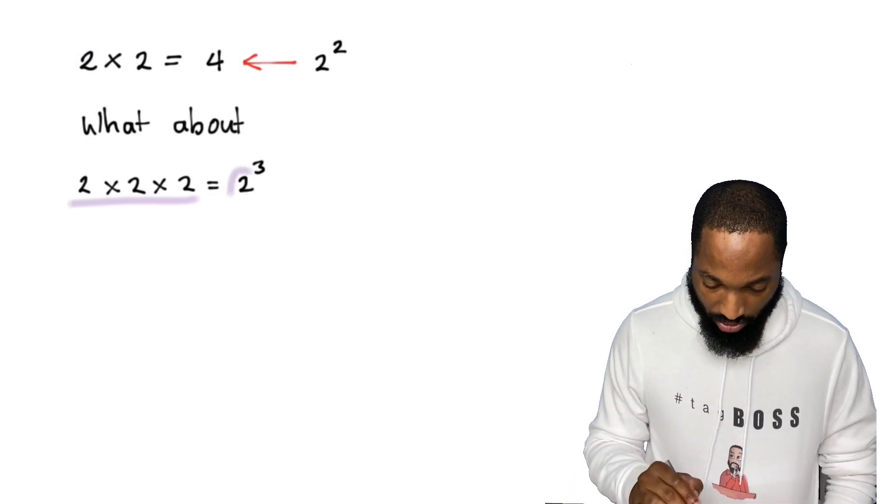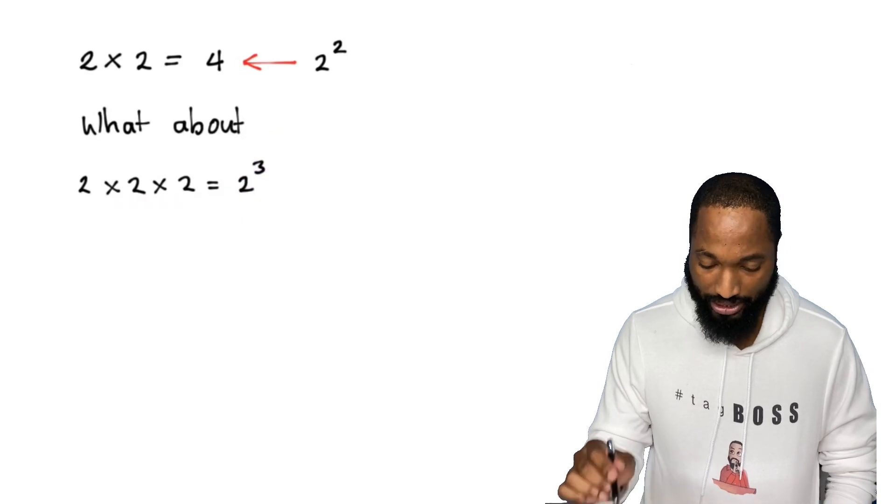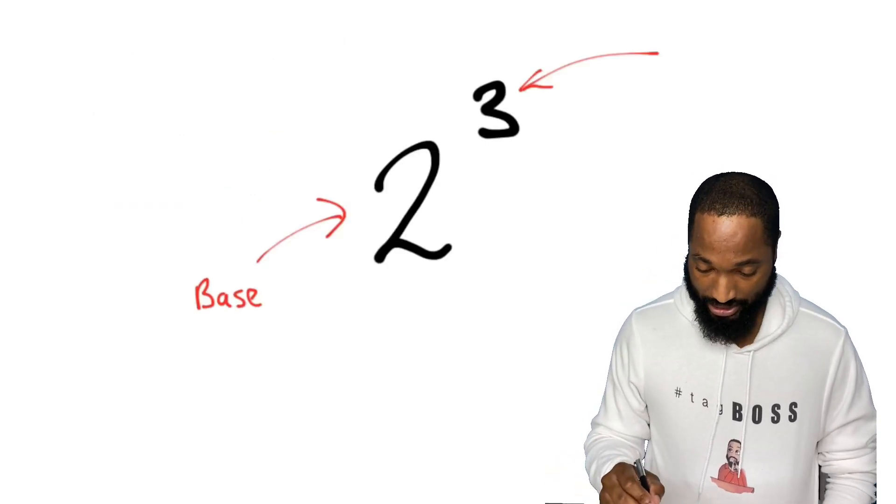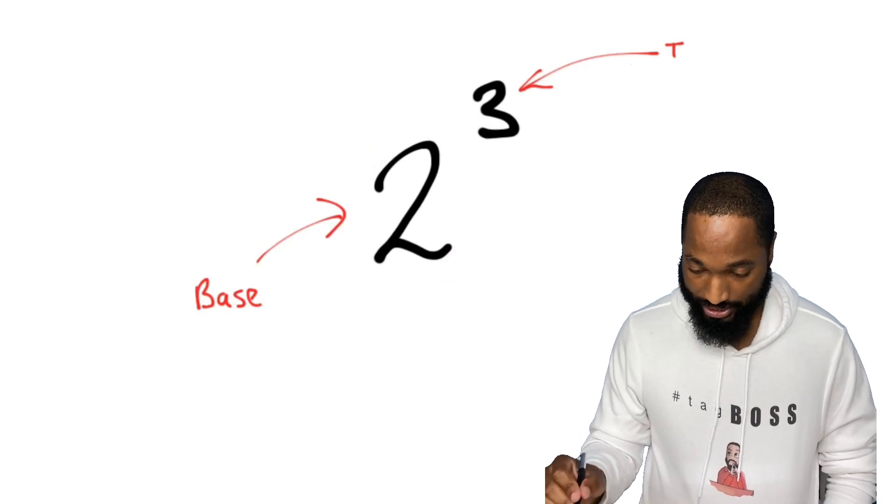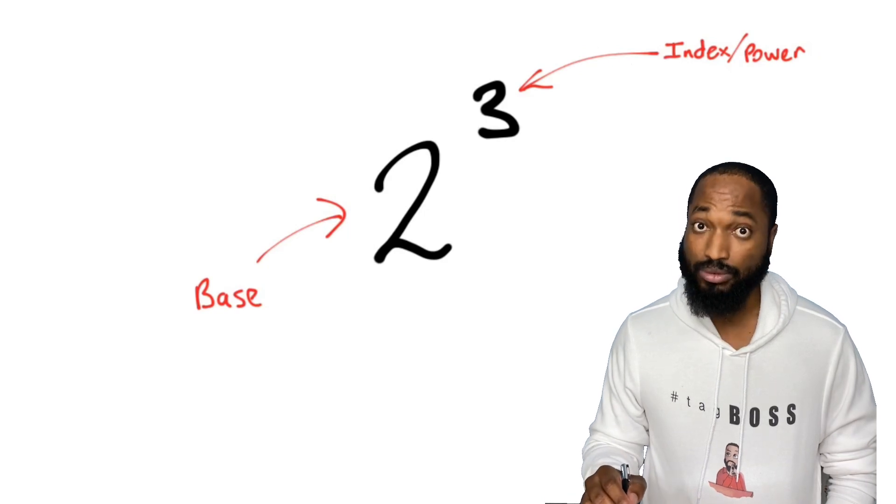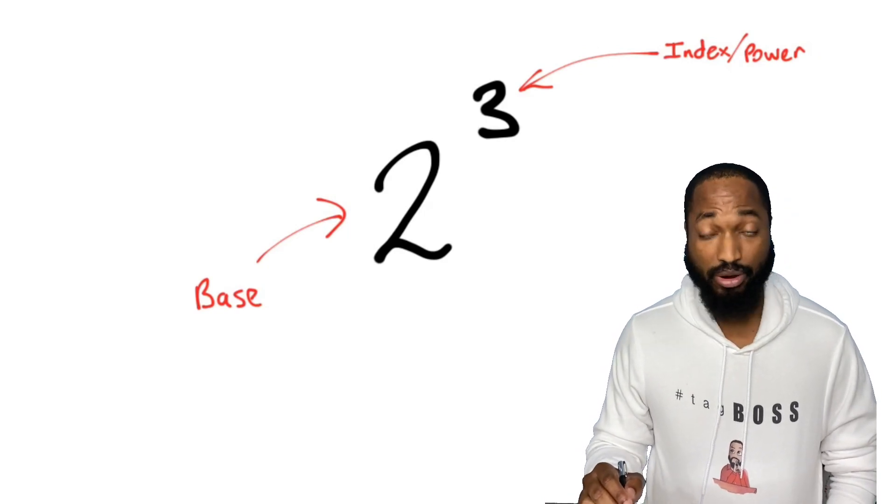Two cube means multiply two by itself three times. This part is called the base. This part is called the index or power. You have to know that forever and ever.